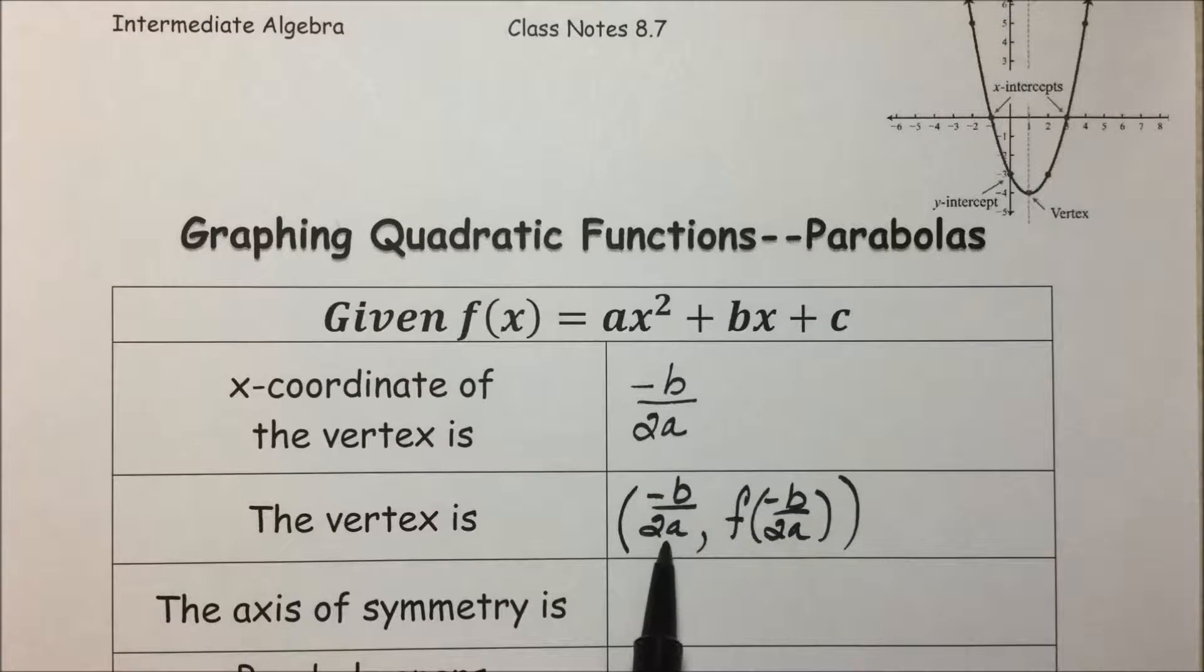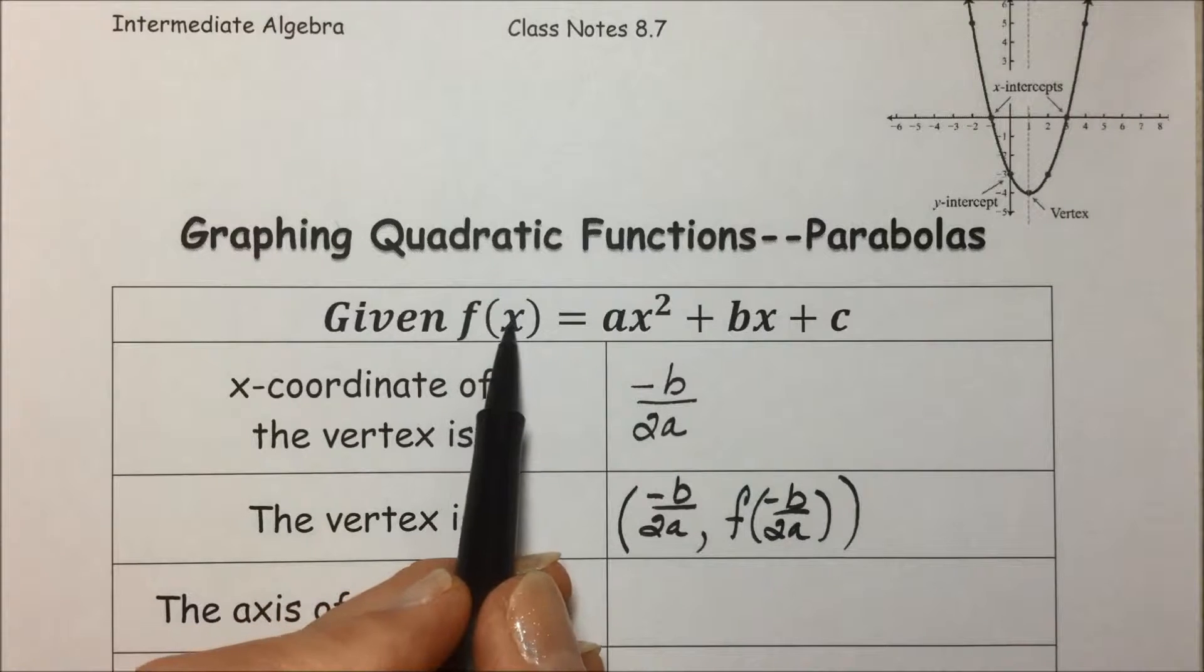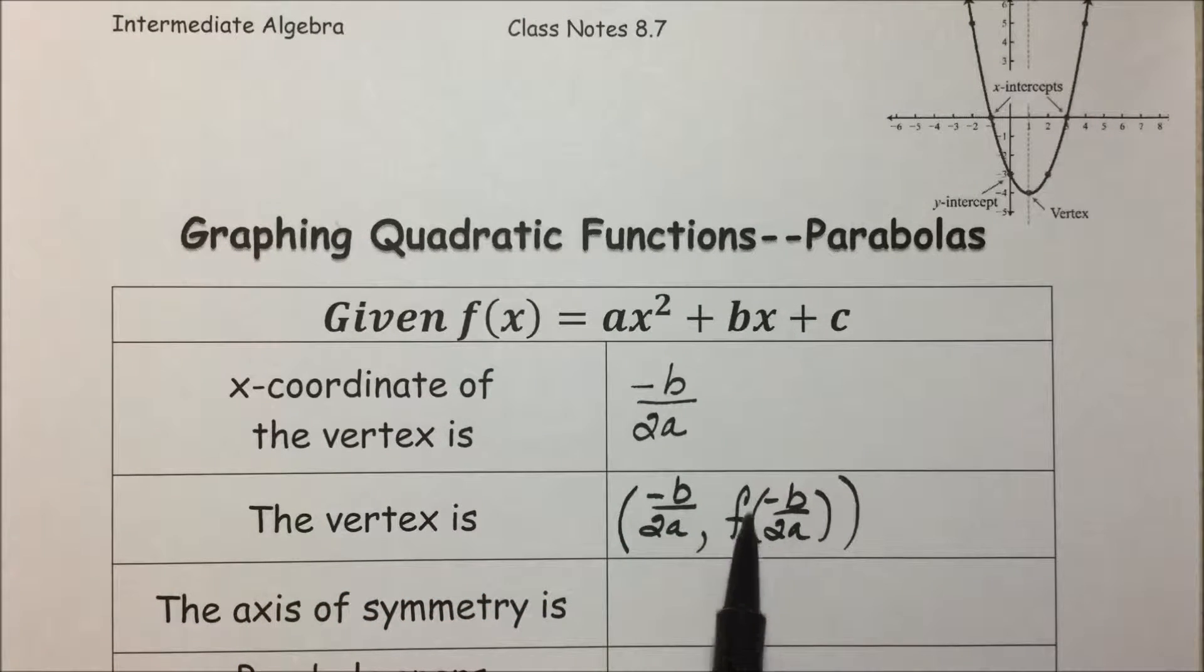We're taking that x value of the vertex, plugging it into the function, and that result is what this is representing for our y-coordinate. The axis of symmetry is x equal to the x-coordinate of the vertex, so it'll be -b/2a.